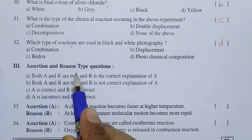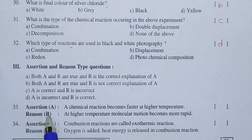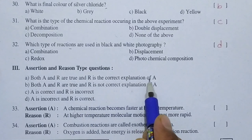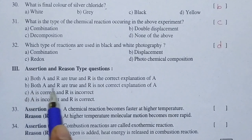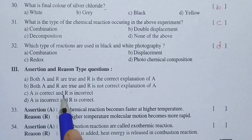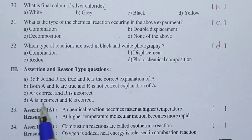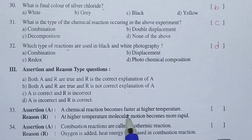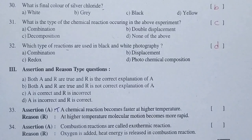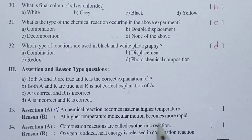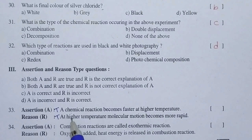Now we see Roman number 3, assertion and reason type questions. Option A: both A and R are true and R is the correct explanation of A. Option B: both true but R is not the correct explanation. Option C: A is correct, R is incorrect. Option D: A is incorrect, R is correct. Question 33: Assertion — a chemical reaction becomes faster at high temperature (true); Reason — at higher temperature molecular motion becomes more rapid (true, correct explanation). So option A is the right answer.